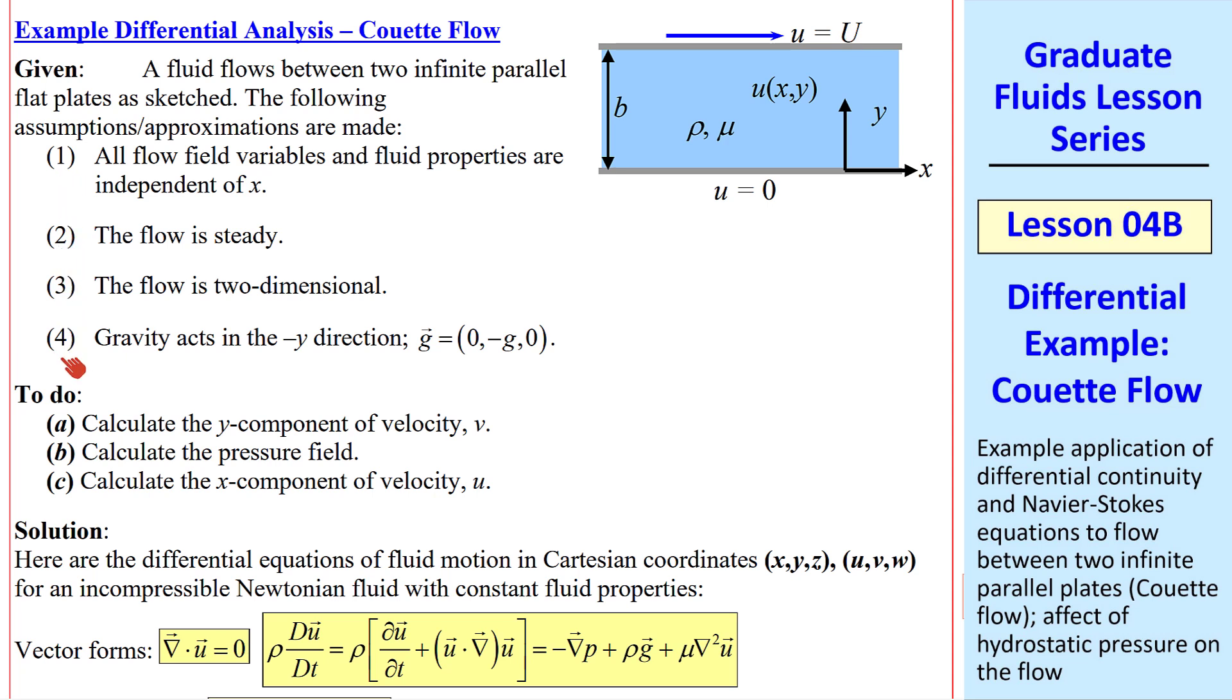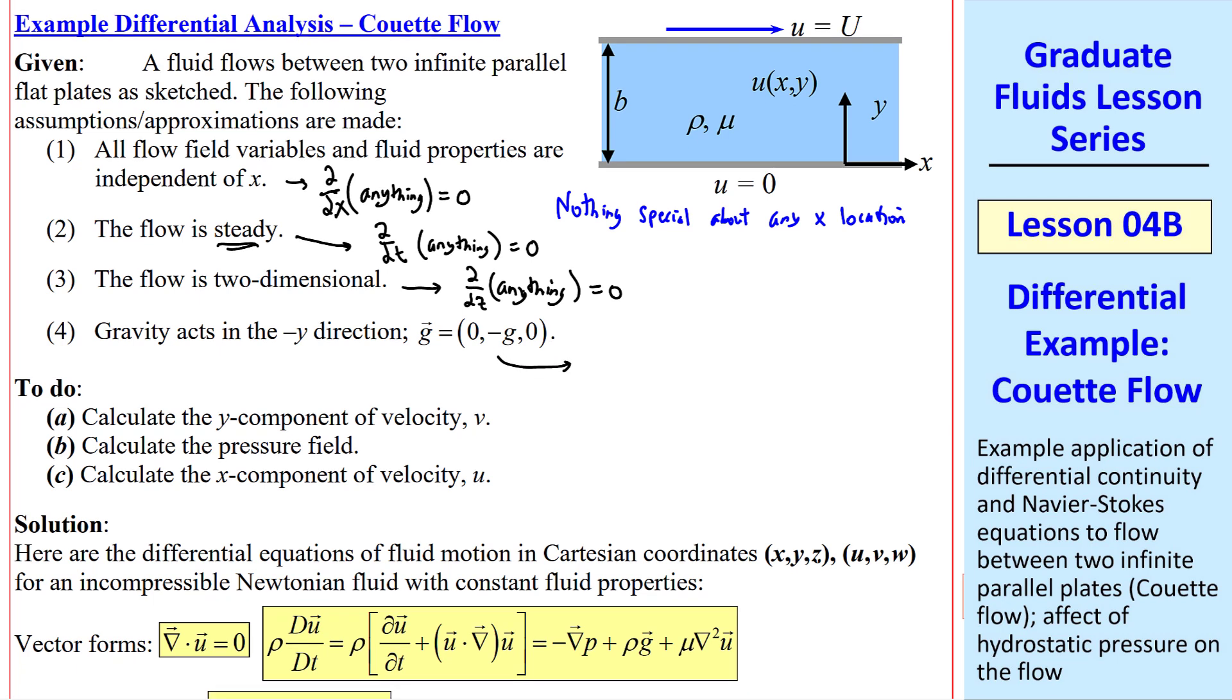I list four assumptions or approximations. The first one can be written mathematically as del del x of anything equals zero. In other words, there's nothing special about any x location. We can be here or here or in the next room and we'll see exactly the same thing. Nothing changes with x. The second one can be written similarly as del del t of anything equals zero since the flow is steady.